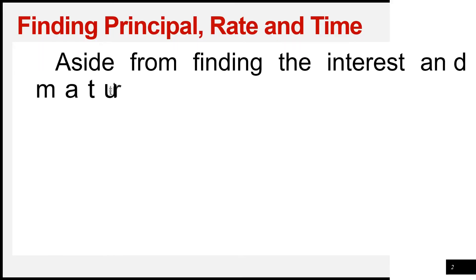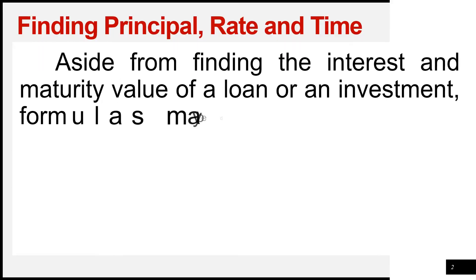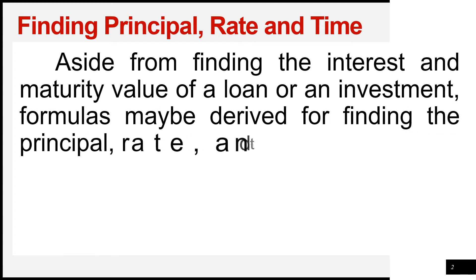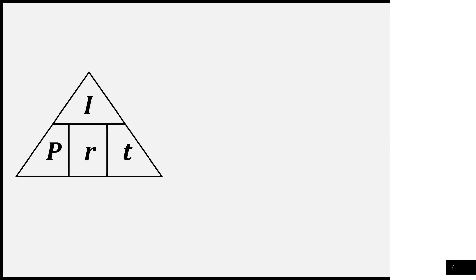Aside from finding the interest and maturity value of a loan or an investment, formulas may be derived for finding the principal, rate, and time. Here are the formulas. Following this mnemonic triangle, which has the symbols for interest, principal, rate, and time, we have these formulas.